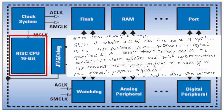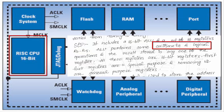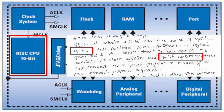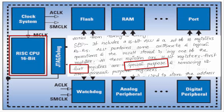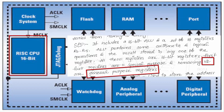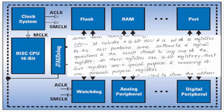The CPU includes a 16-bit ALU and a set of 16-bit registers, R0 to R15. The ALU performs arithmetic and logical operations and the result is stored in any one of the registers. All these registers are 16-bit. The first four registers are special purpose and the remaining ones are general purpose registers.